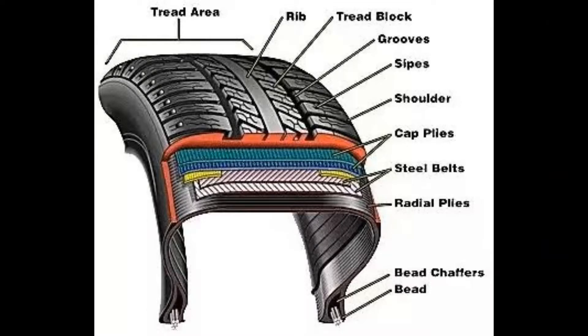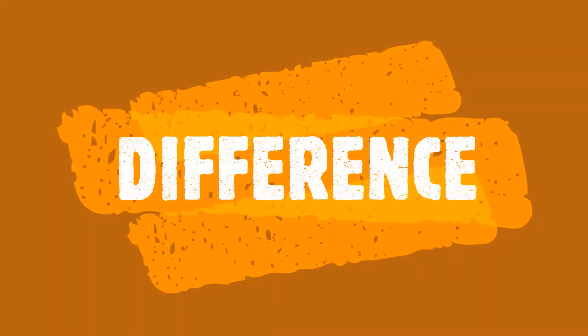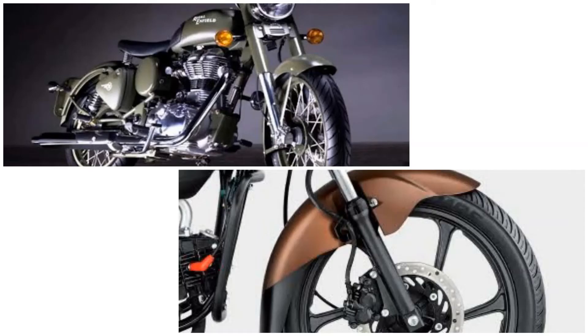For example, we can add the steel plate and radial plate. Now let's see how the difference is — I will tell you what the best is. First, we can use the tubeless tire in the spoke or alloy wheel.